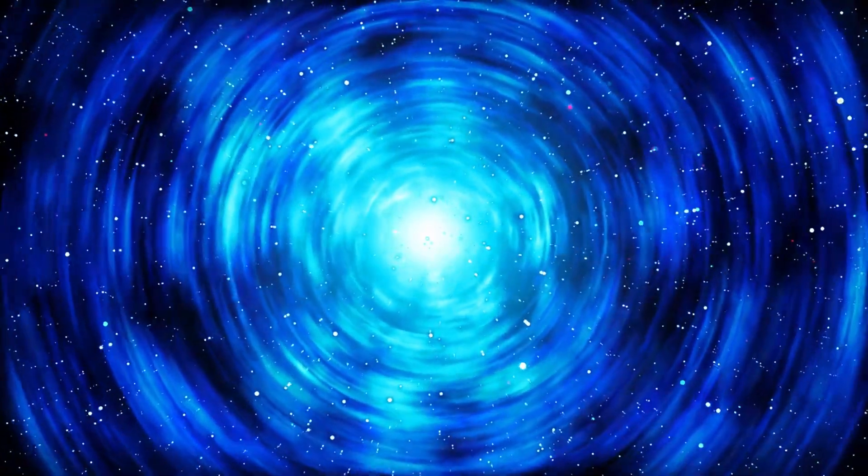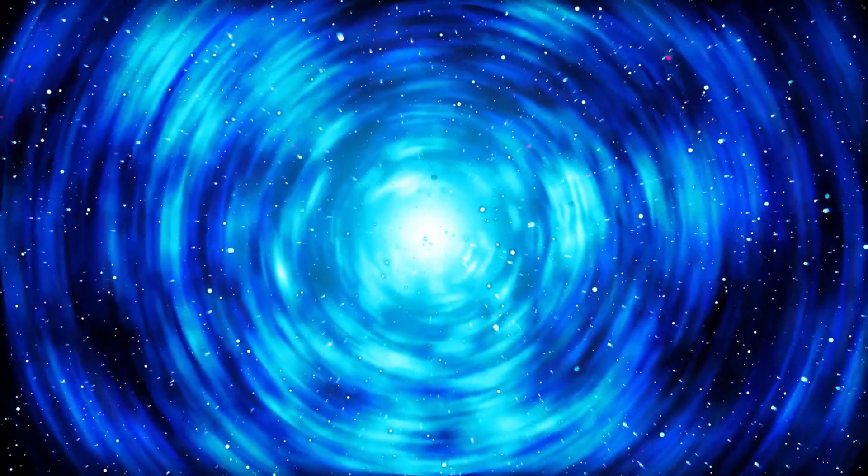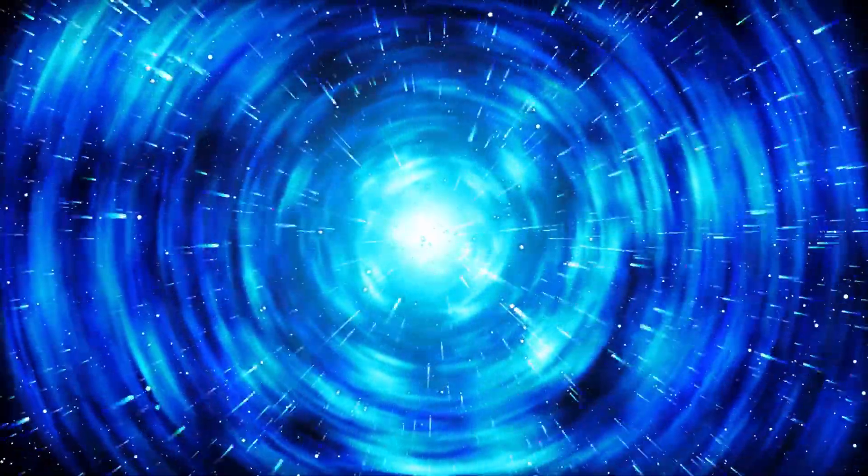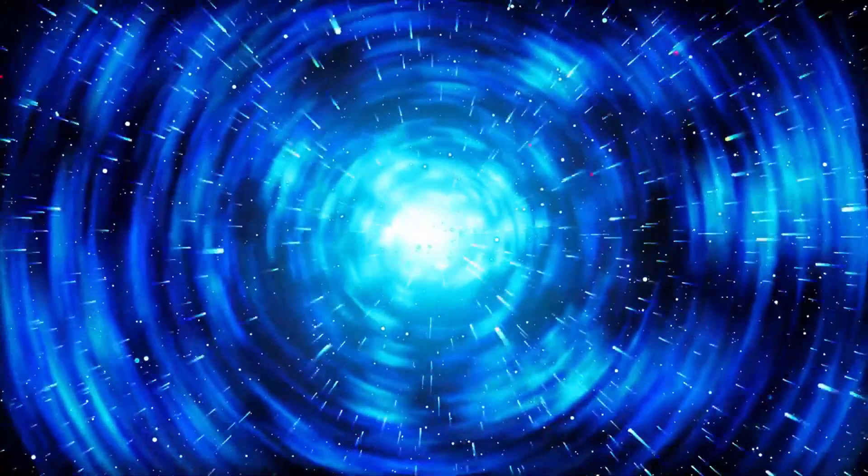This occurs when two opposing magnetic field lines break and reconfigure, releasing massive amounts of energy. This powers solar flares, coronal mass ejections, and even auroras on Earth.